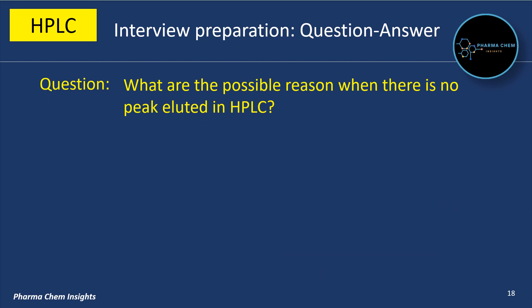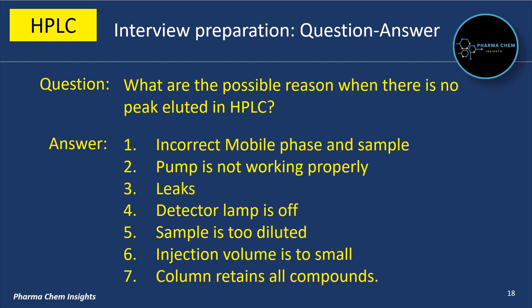What are the possible reasons when there is no peak eluted in HPLC? You can check for the following reasons: first, incorrect mobile phase and sample; second, pump is not working properly; third, there may be a leak in the system; fourth, detector lamp may be off; fifth, sample is too diluted; sixth, injection volume is too small; seventh, column retains all compounds.